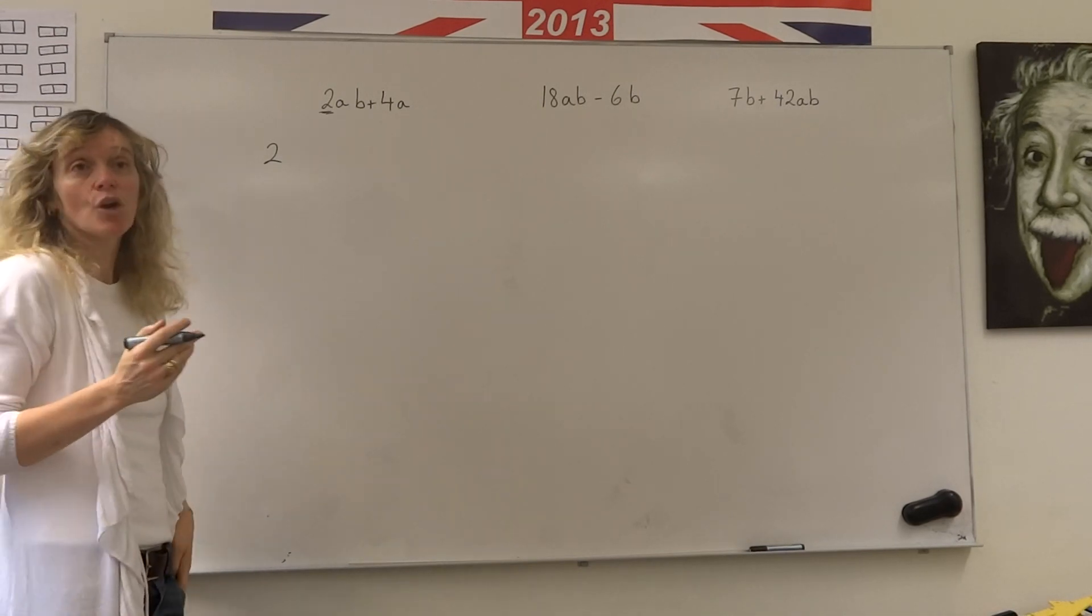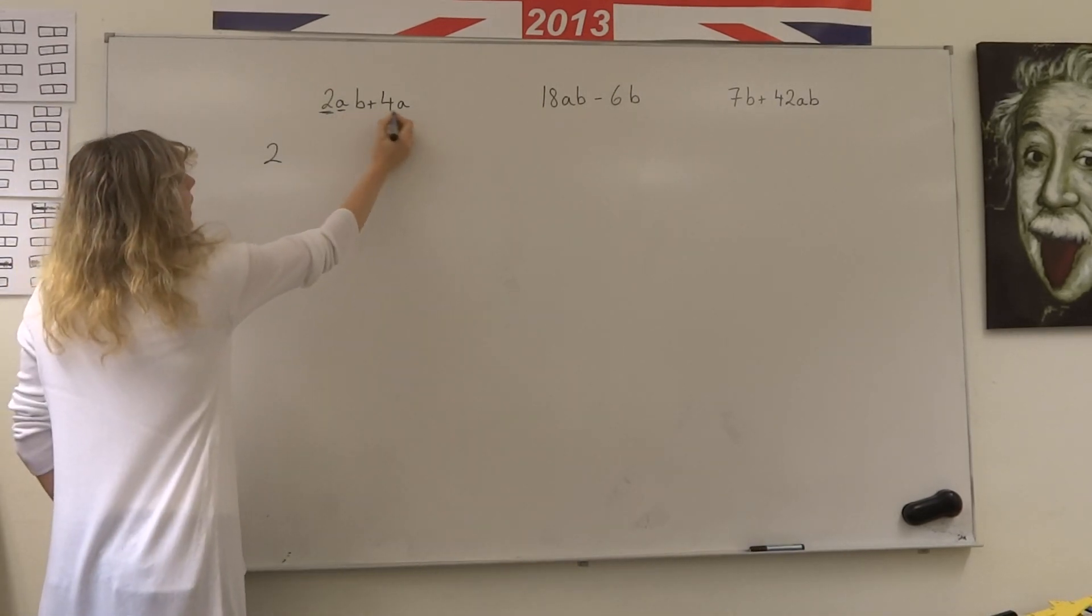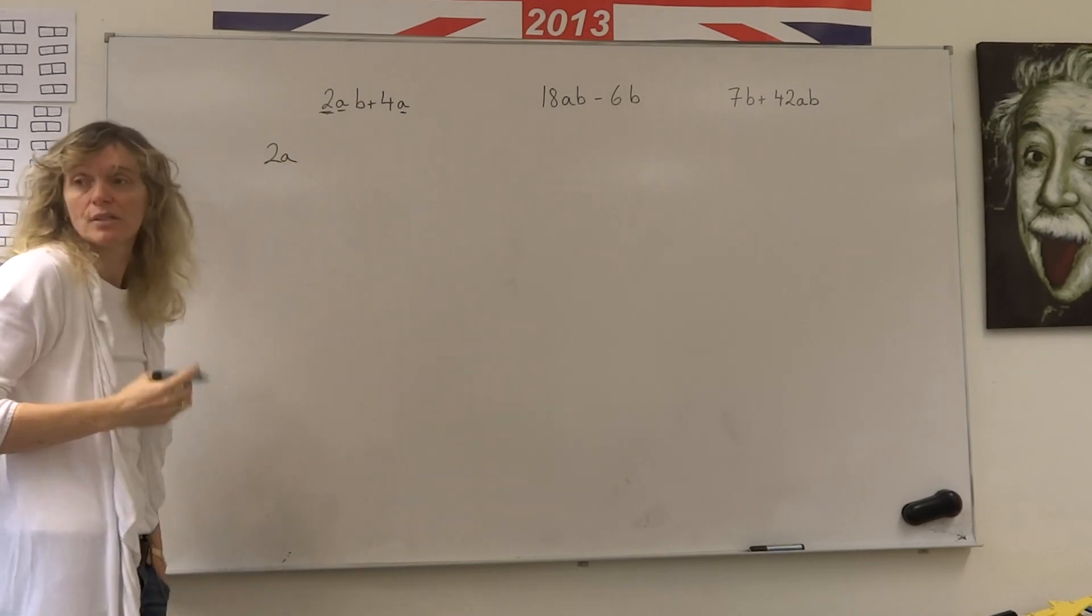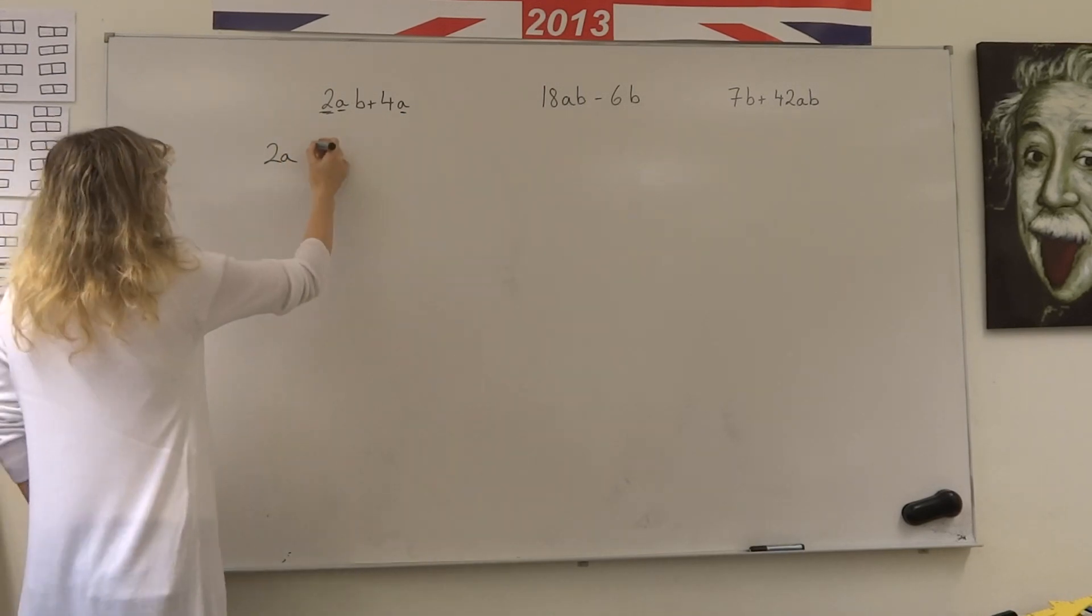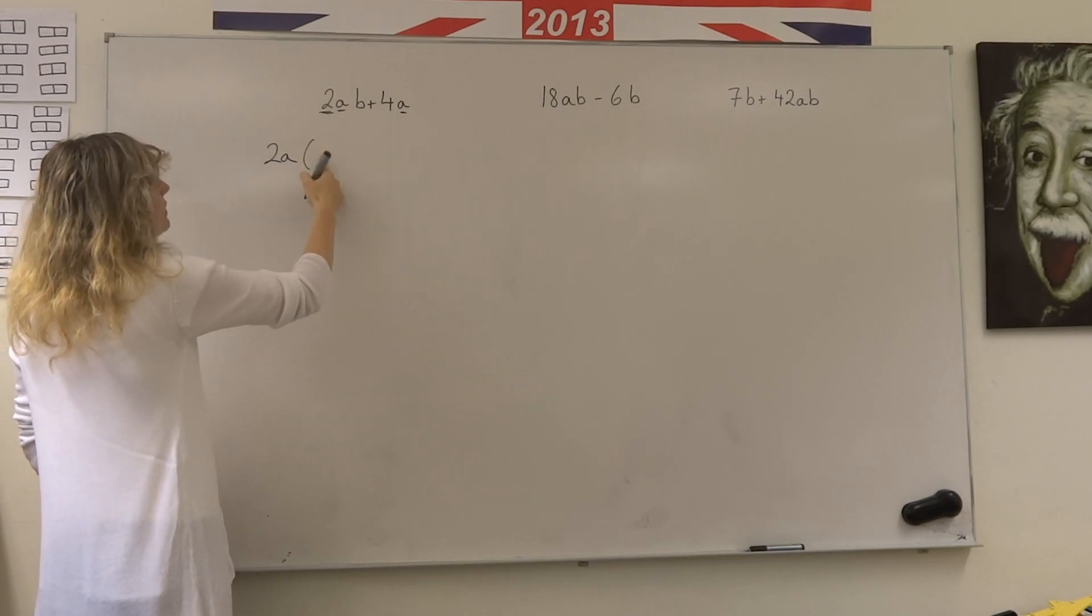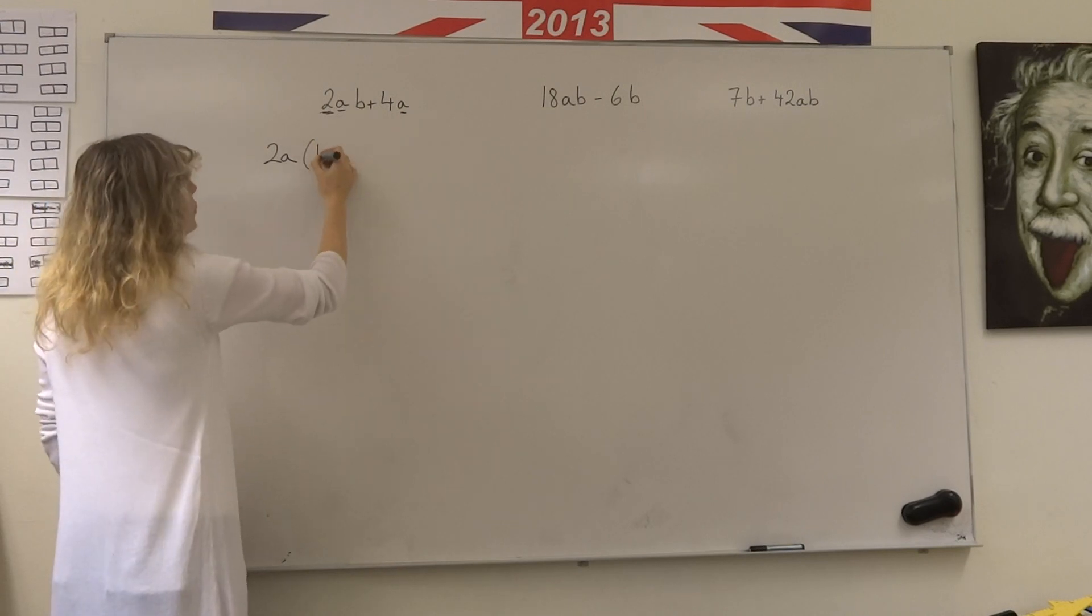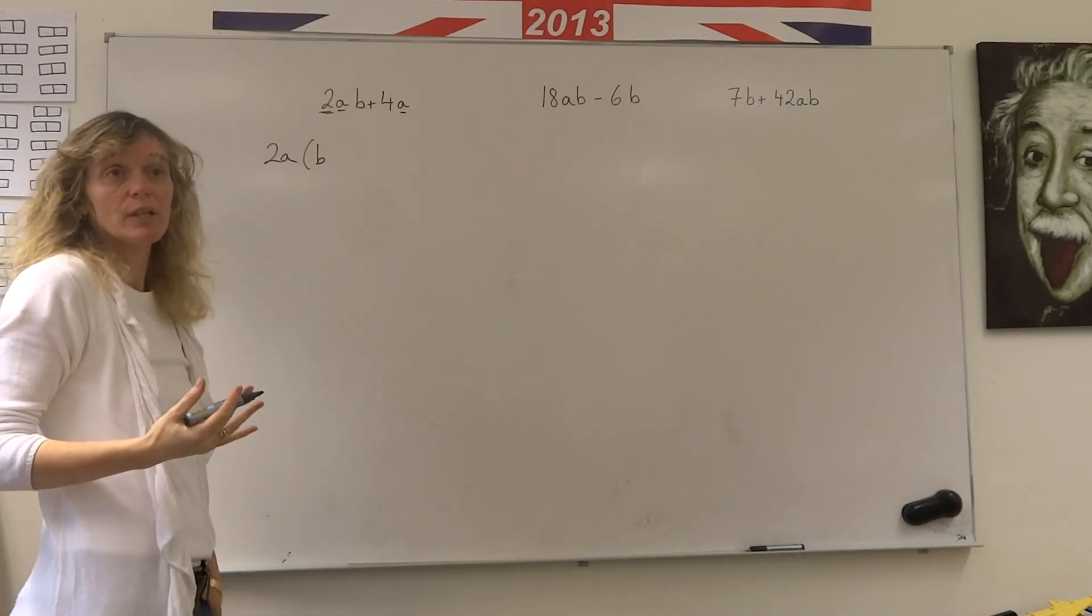But I also have a letter that's common to both of them. I have an A here and an A here. So I could remove out to the front 2 lots of A. If I do that, what is left? 2A times something is going to give me 2AB. Well, 2A times B would give me 2AB.